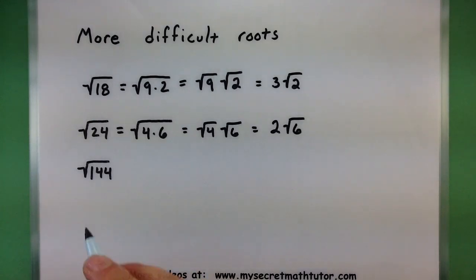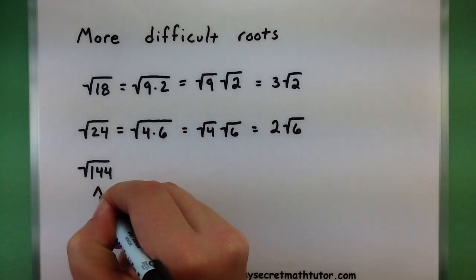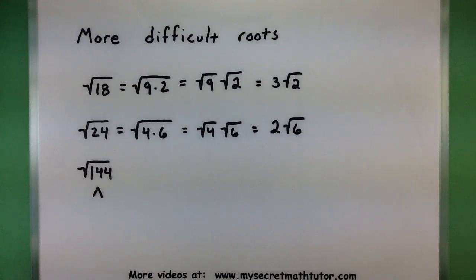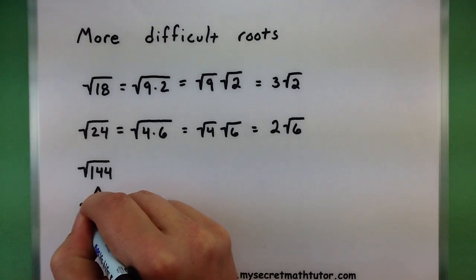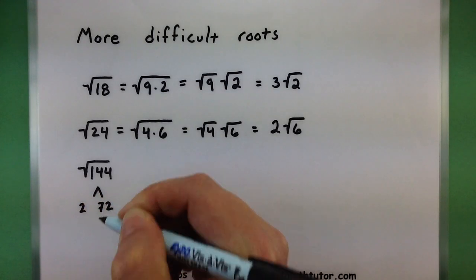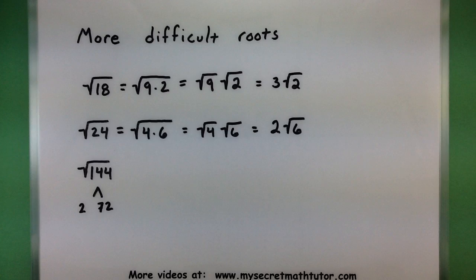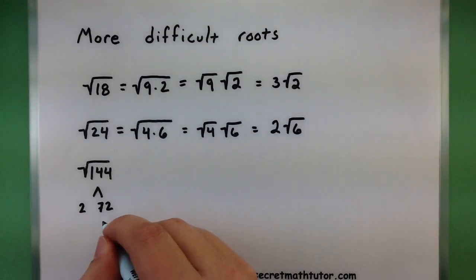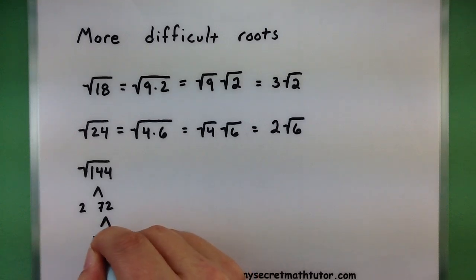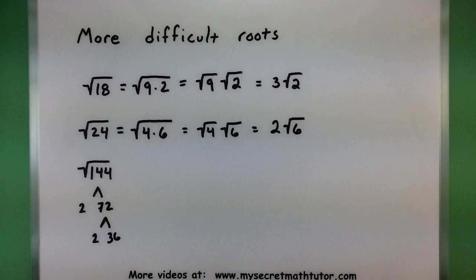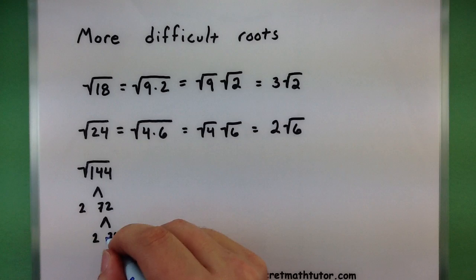If you have a very large number, try seeing what smaller numbers will divide into it. So for example, 144, I know that's the same as 2 times 72. And neither one of those are one of our squared numbers. But we can keep breaking this down. 72 is the same as 2 times 36. Now as I break this down, I'm constantly looking for squared numbers, and I think we finally got one here.